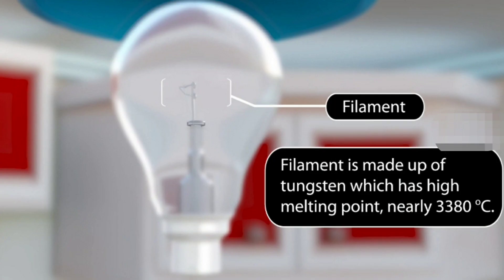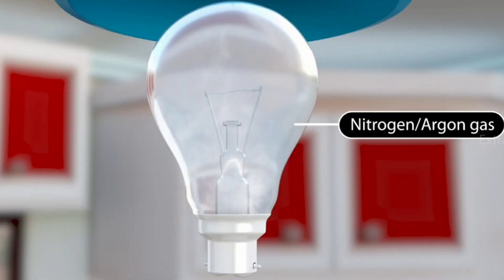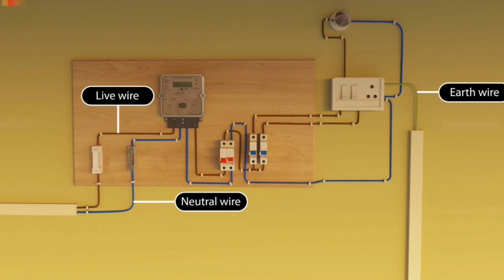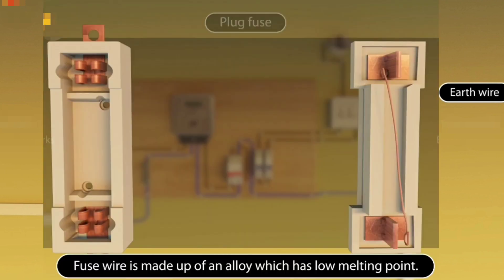Tungsten metal is used for making the filaments of electric bulbs because it has a very high melting point of about 3380 degrees Celsius. The bulb is filled with a chemically unreactive gas like argon or nitrogen, or a mixture of both.